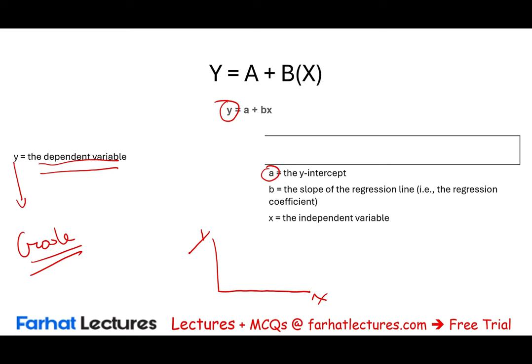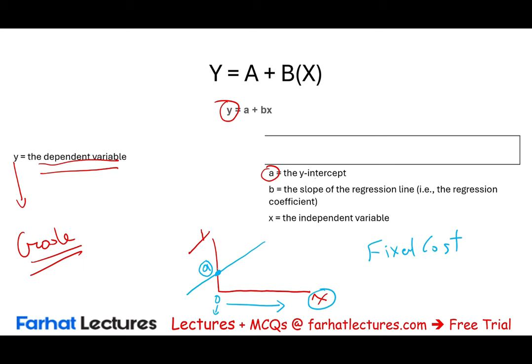This line will intercept the y-axis at some point — that is a, the y-intercept, where x equals zero. In cost accounting terminology, a represents the fixed cost. Even if you produce zero units, you still have a fixed cost — for example, $10,000. So a is the y-intercept, also known as the fixed cost.